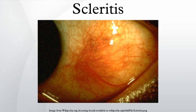Symptoms of scleritis include redness of the sclera and conjunctiva, sometimes changing to a purple hue, severe ocular pain which may radiate to the temple or jaw. The pain is often described as deep or boring. Photophobia and tearing are also common symptoms.